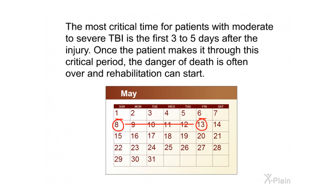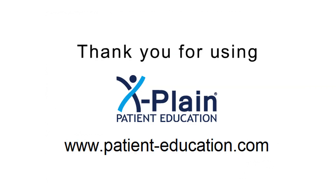The most critical time for patients with moderate to severe TBI is the first three to five days after the injury. Once the patient makes it through this critical period, the danger of death is often over and rehabilitation can start. Thank you for using Explain.